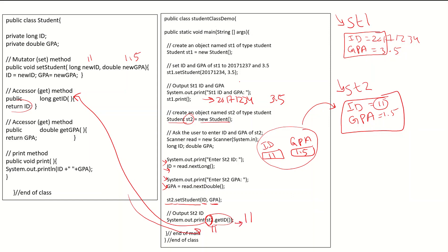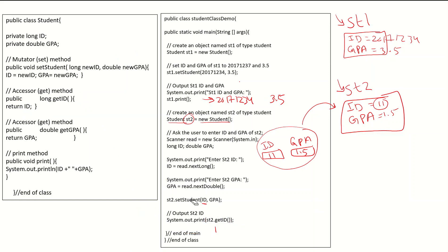We cannot do the output directly — we cannot say System.out.print(st2.id) because ID is private and we cannot access private members directly from outside the class. So let's recap the concepts we discussed.